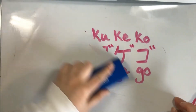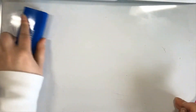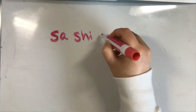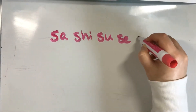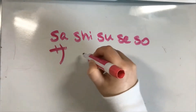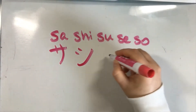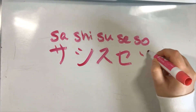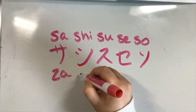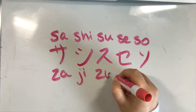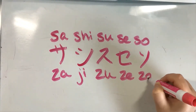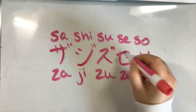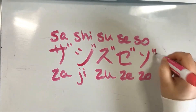The next one is our s characters. So we have sa, shi, su, se, and so. We're going to change it to za, ji, zu, ze, zo by adding the same quote sign.